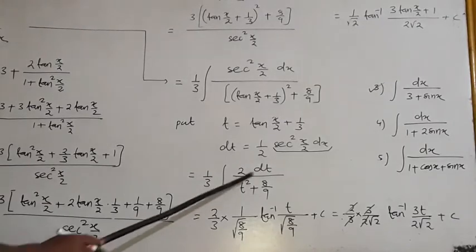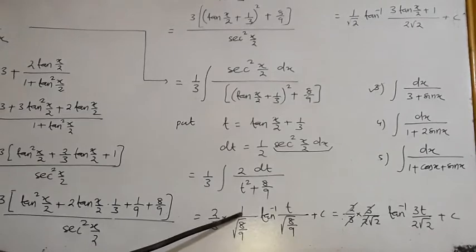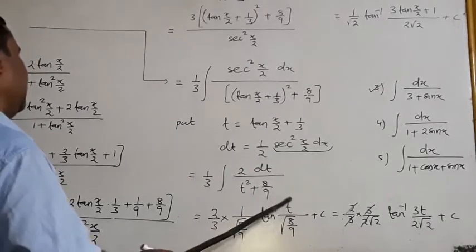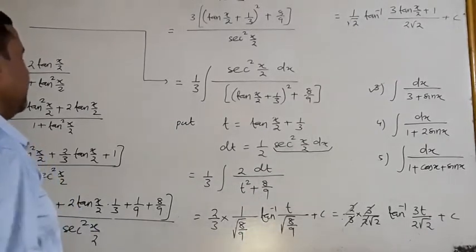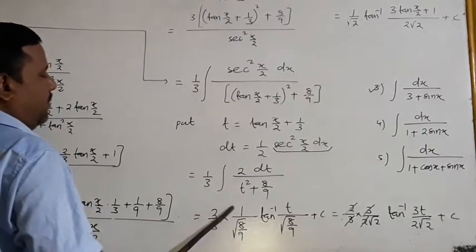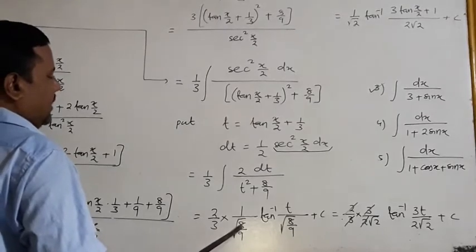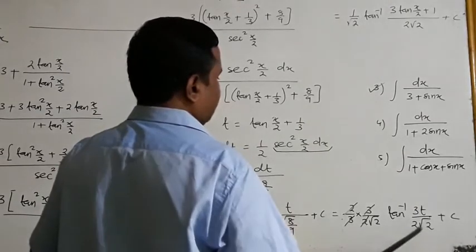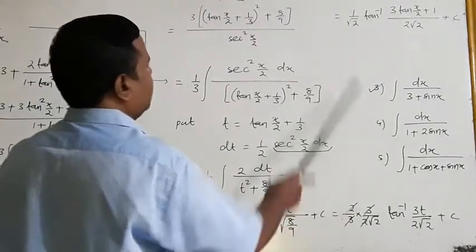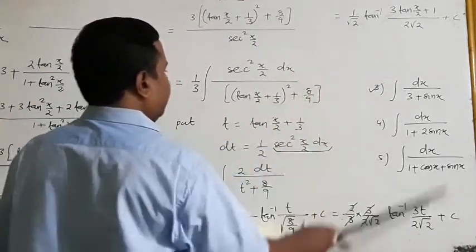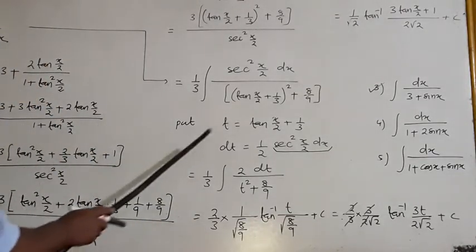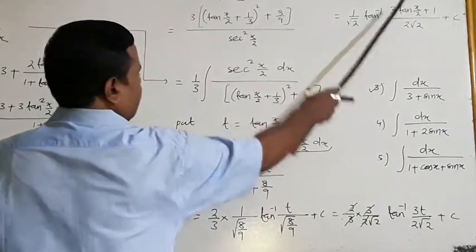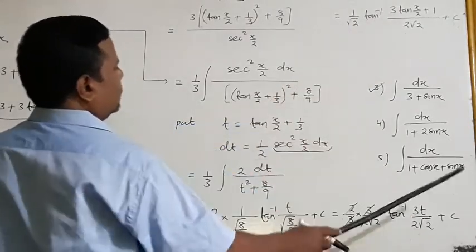The integral is (2/3)∫dt/(t²+(8/9)). Using the formula ∫dt/(t²+a²) = (1/a)·tan⁻¹(t/a), with a = √(8/9) = 2√2/3: result = (2/3)·(3/(2√2))·tan⁻¹(t/(2√2/3)) = (1/√2)·tan⁻¹(3t/(2√2)). So (1/√2)·tan⁻¹((3tan(x/2)+1)/(2√2)) + C, since 3t = 3tan(x/2)+1.